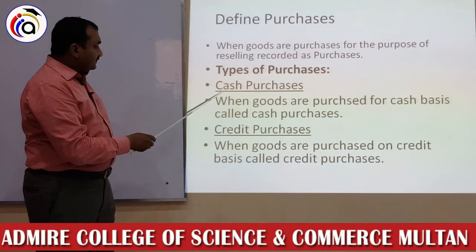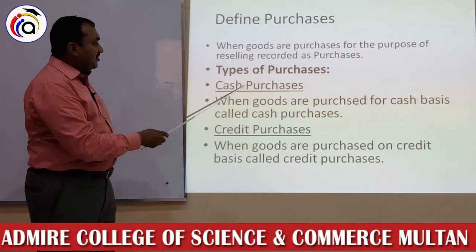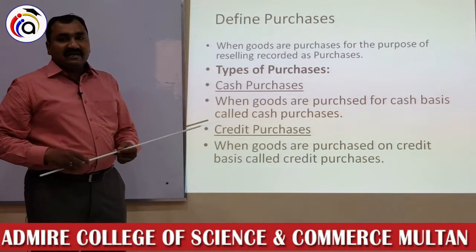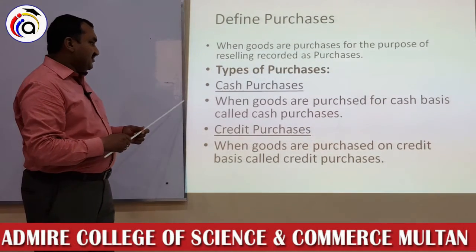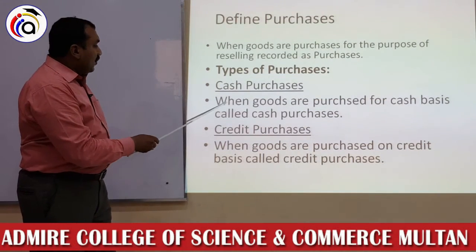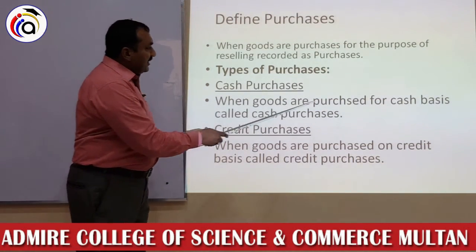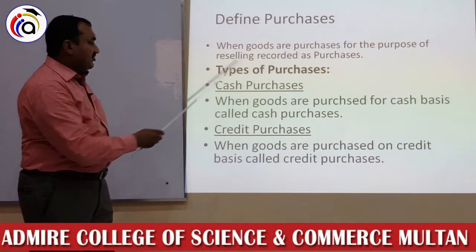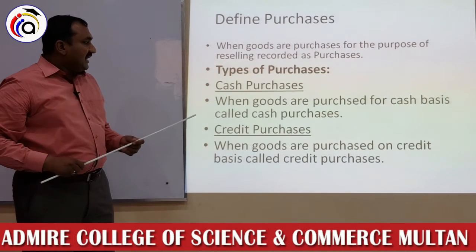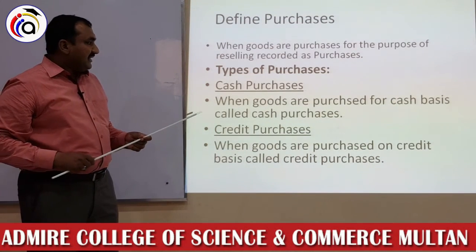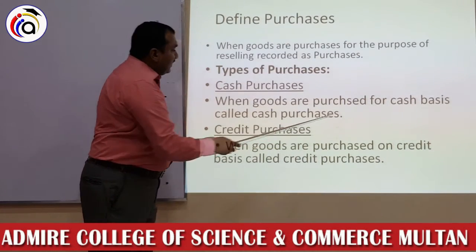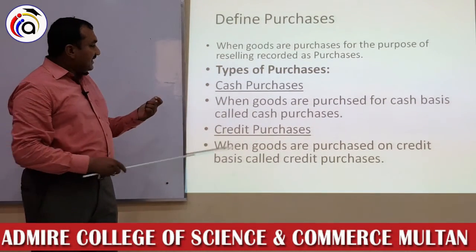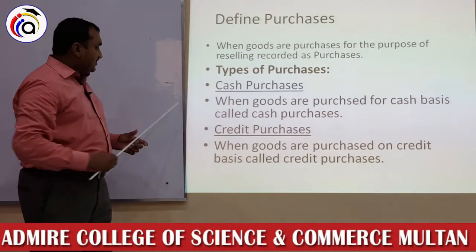Types of Purchases: Cash Purchases. Jaise Sales ki do types thi, aise hi Purchases ki bhi hain. When goods are purchased on a cash basis, called Cash Purchases. Aapne goods ko khareeda cash basis par, foran aapne paise ada kar diye, to wo Cash Purchases hai.